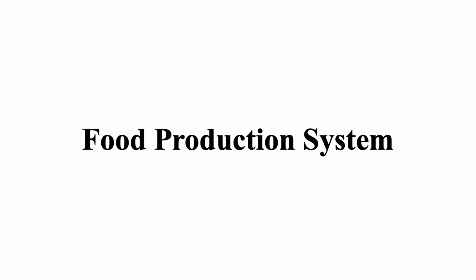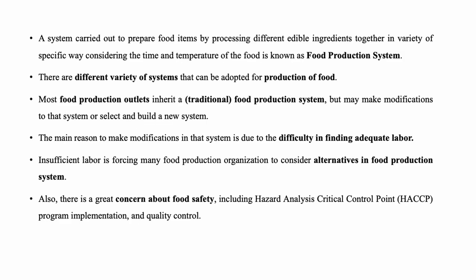Let's study about food production system. A system that is carried out to prepare food items by processing different edible ingredients together in a variety of specific ways, considering the time and temperature of the food, is known as a food production system.